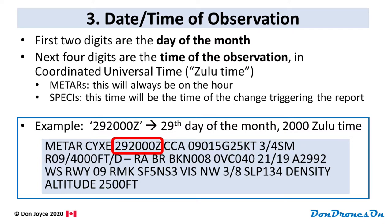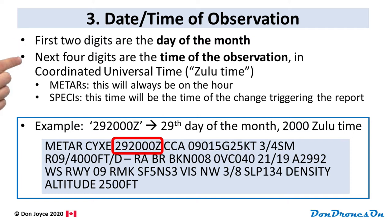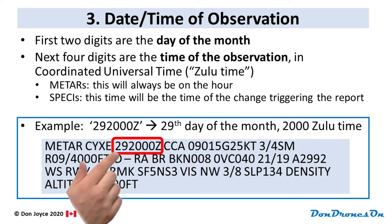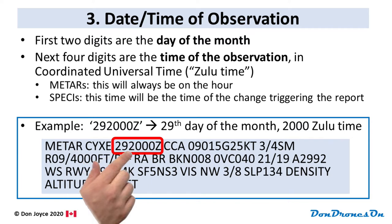Now we get into more cryptic stuff. The next group is the date and time of the observation, coded rather mystically. The first two digits are simply the day of the month — in this case, the 29th. The next four digits are the time of the observation in Zulu time, or Coordinated Universal Time. For METARs this will always be on the hour, but for SPECIs it will be the time of the change that triggered the event. Our example shows 29 2000Z — the 29th day of the month at 2000 Zulu time. Saskatchewan is six hours different from Zulu, so this really means 2 p.m.